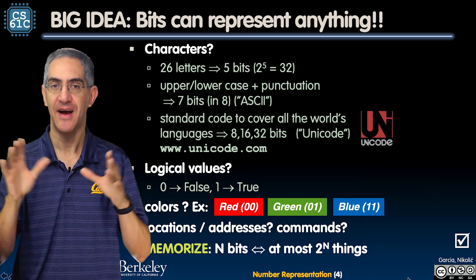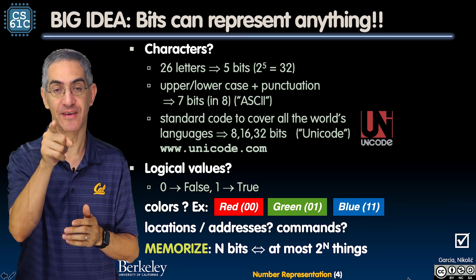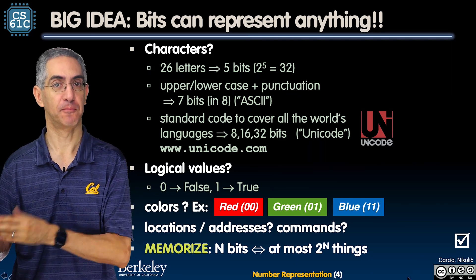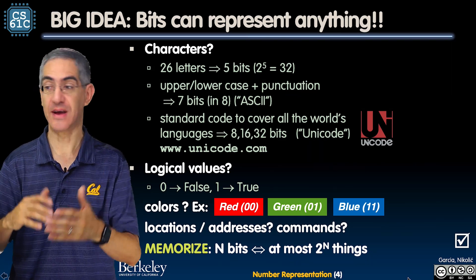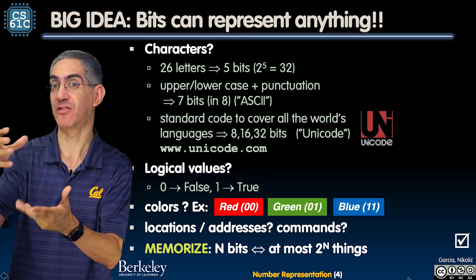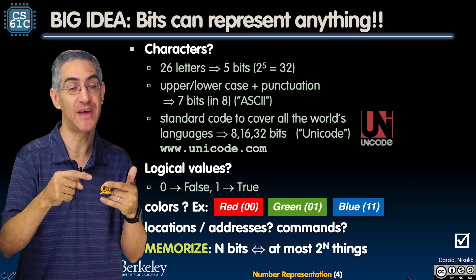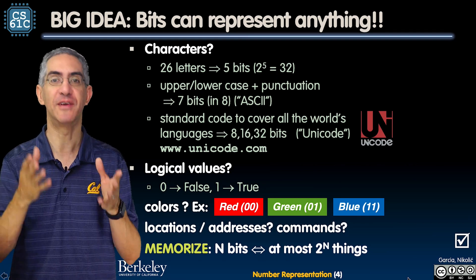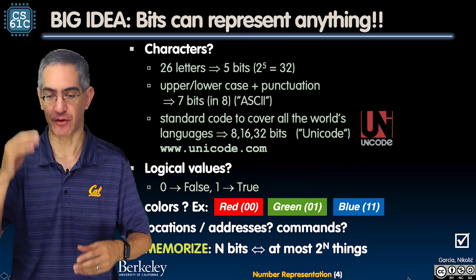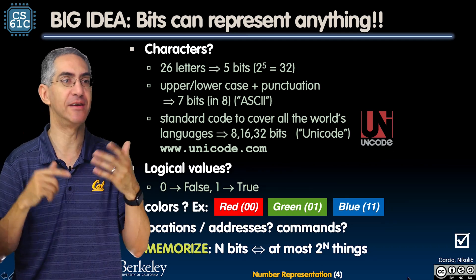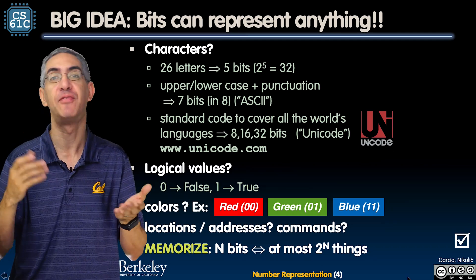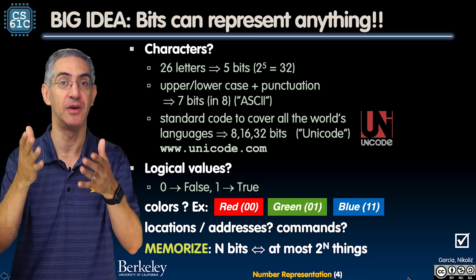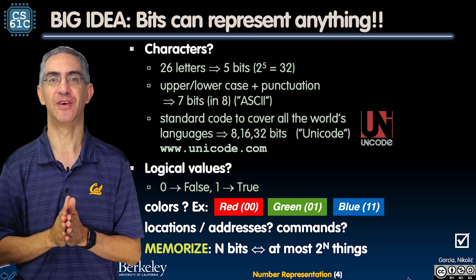Here's the big idea of this lecture — memorize this: n bits gives you 2^n things. Said another way, if you've got some number of things, how many bits do you need? Take the log base 2 of that number and take the ceiling — that's the number of bits you need. For example, 26 letters: log base 2 of 26 is about 4-point-something, the ceiling is 5, therefore you need five bits because 2^5 is 32 — the smallest power of two bigger than the number of things you want to store. See you in the next video.